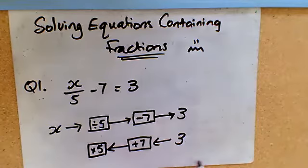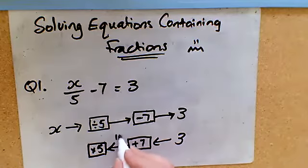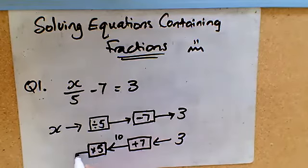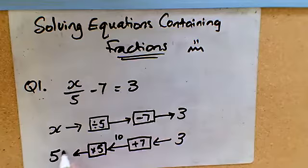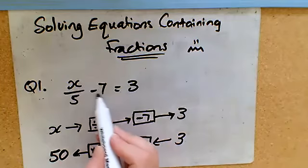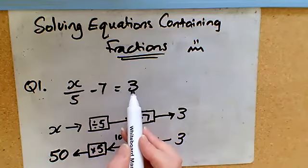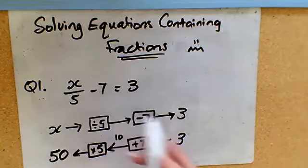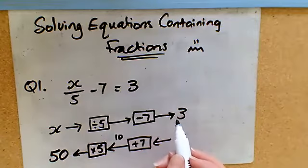So let's see where that gets us. 3 plus 7 would be 10, 10 times 5 out would come the number 50. So this is the value of x. 50 divided by 5 is 10, take away 7 is 3. Remember you can always check your answer by substituting back into the equation.